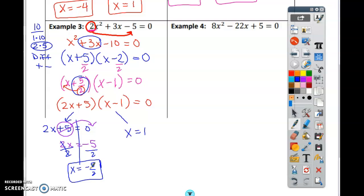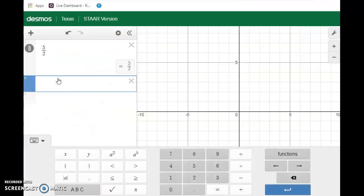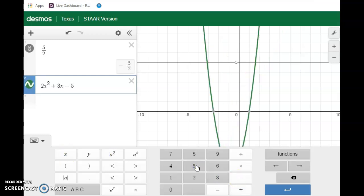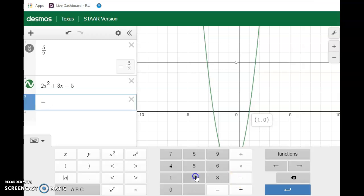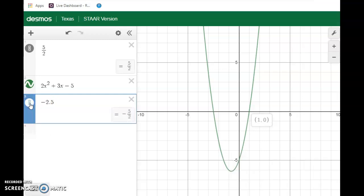And if we put it in Desmos, 2x squared plus 3x minus 5. Look at where it crosses. Negative 2.5 and 1. Those are my solutions. One of the solutions was 1. The other one was negative 2.5. And if I do negative 2.5, type it here and change it to a fraction. It will give you the fraction. So you can do it however you want.